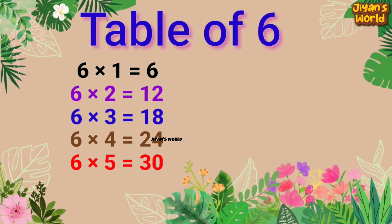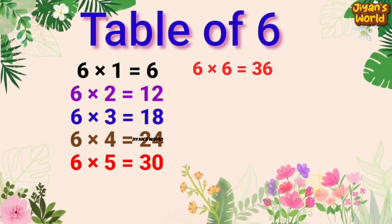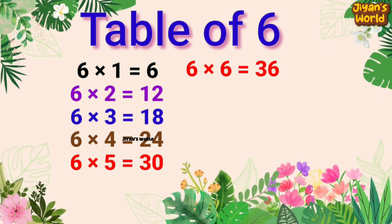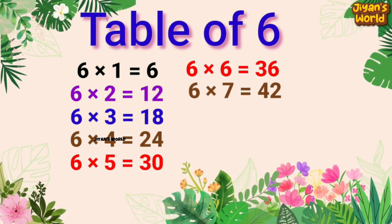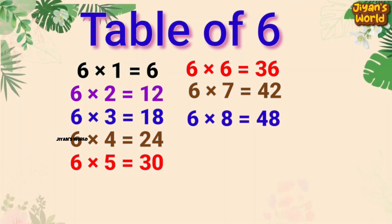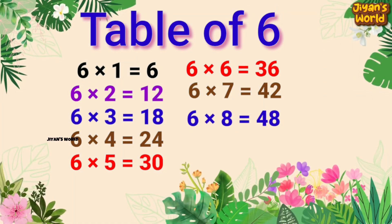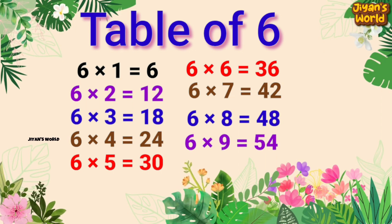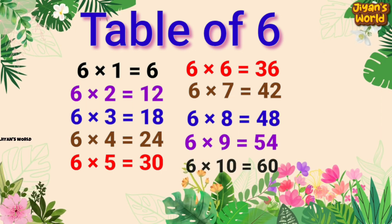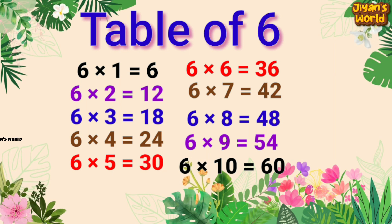6 5s are 30, 6 6s are 36, 6 7s are 42, 6 8s are 48, 6 9s are 54, 6 10s are 60.